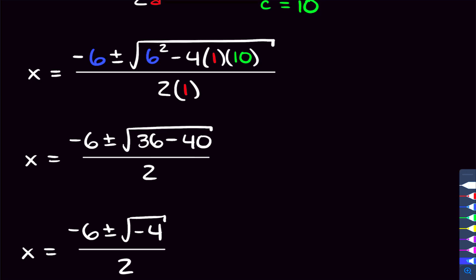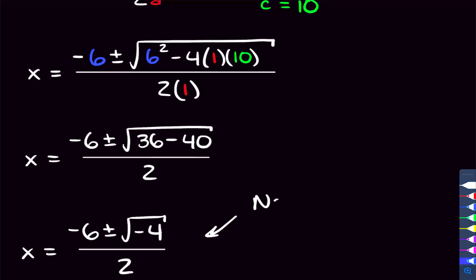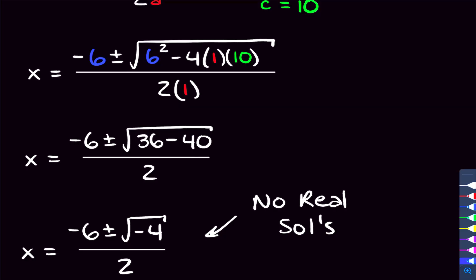Before you learned imaginary numbers, when you saw a negative underneath the square root you were taught to say this quadratic has no real solutions. And that's exactly true — there are no real solutions here. But there are imaginary solutions; we do get imaginary numbers when we have a negative underneath the square root. So now that we know about imaginary numbers, we can go a little bit further with this. If you haven't seen my videos on imaginary numbers yet, I recommend you check them out — I'll link my algebra playlist in the top right-hand corner.